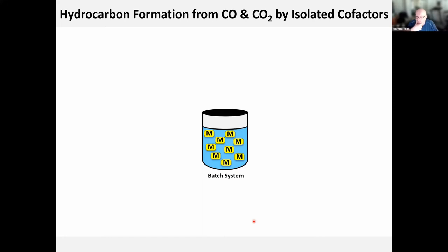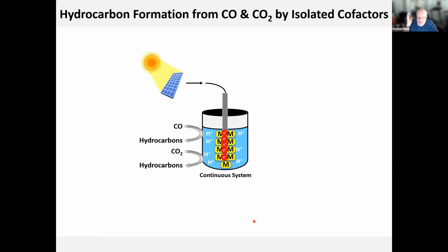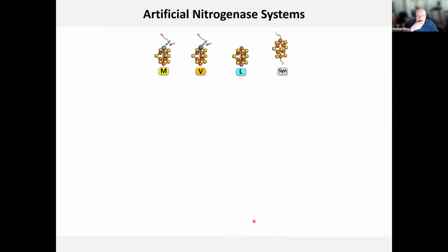We are now at a point where in a batch system with isolated clusters, adding electrons and a proton source, we can indeed form hydrocarbons from carbon monoxide and carbon dioxide. The vision is to get a continuous system, perhaps attaching it to electrodes to continuously pump electrons, coupled to a light source for a continuous system. Our game plan is to provide the proof of concept that this is indeed possible.